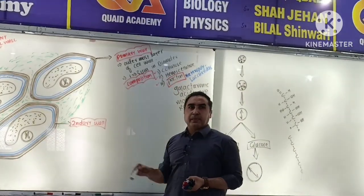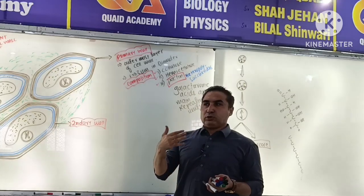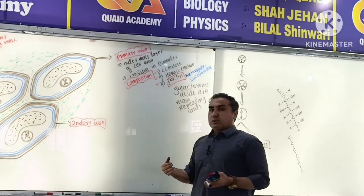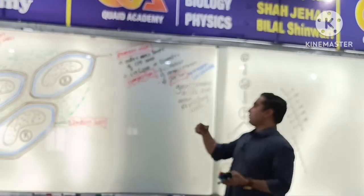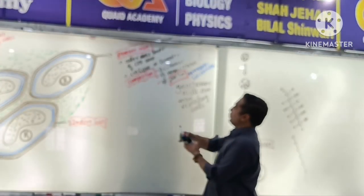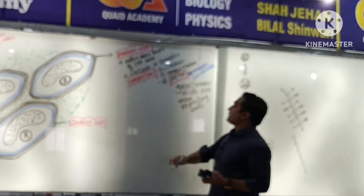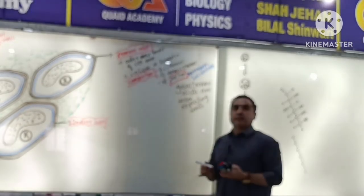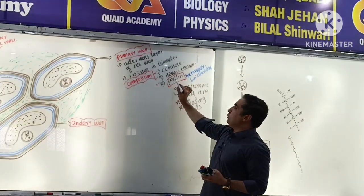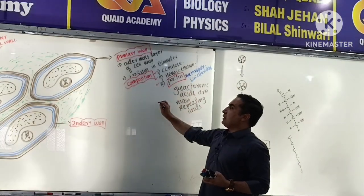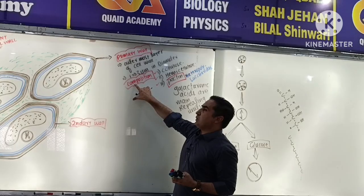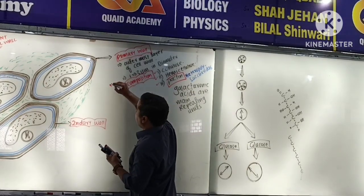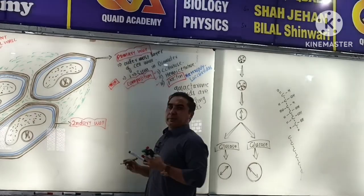The primary wall composition - there are different guides and books. It's a test for three numbers: Number 1 is cellulose, Number 2 is hemicellulose, Number 3 is pectin. The composition of MCQ number 1 - the primary wall - is cellulose, hemicellulose, and pectin.